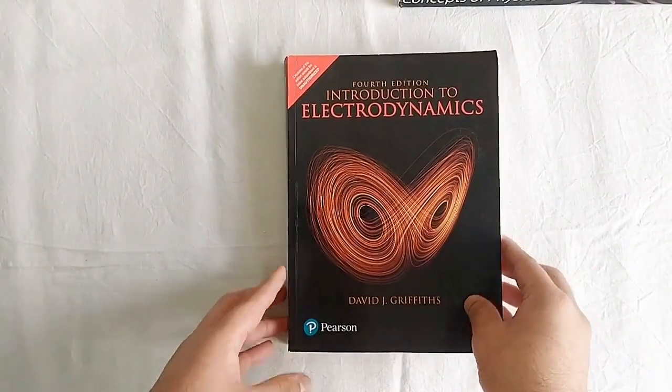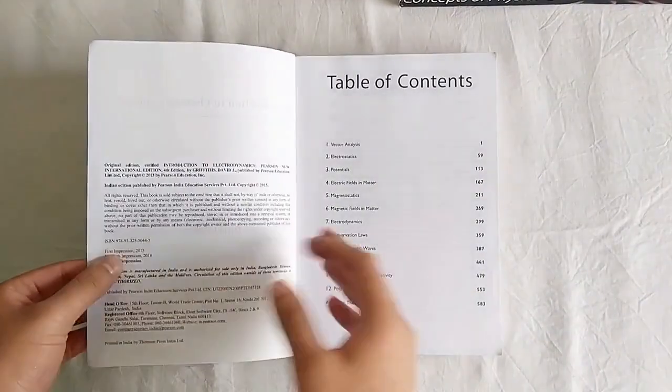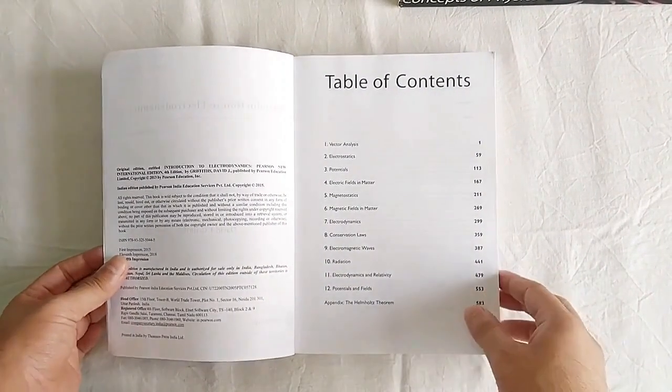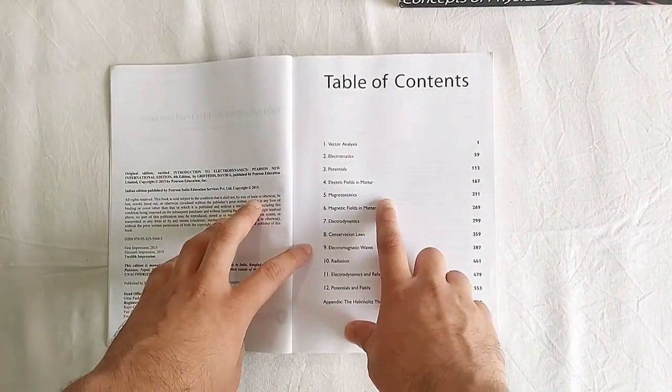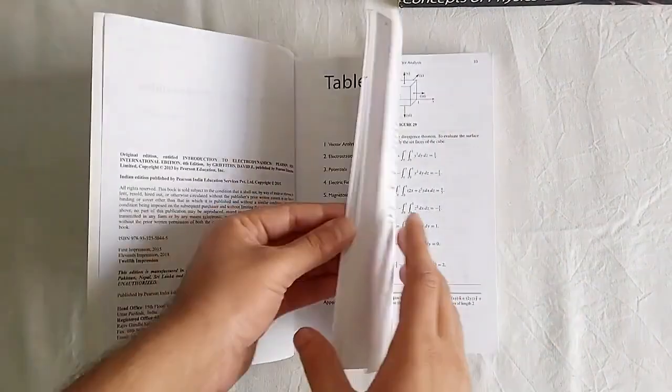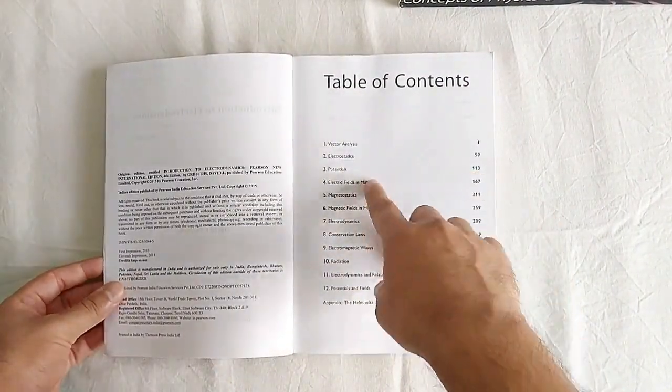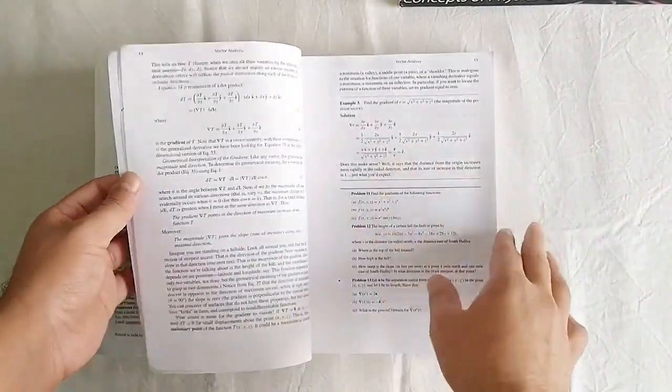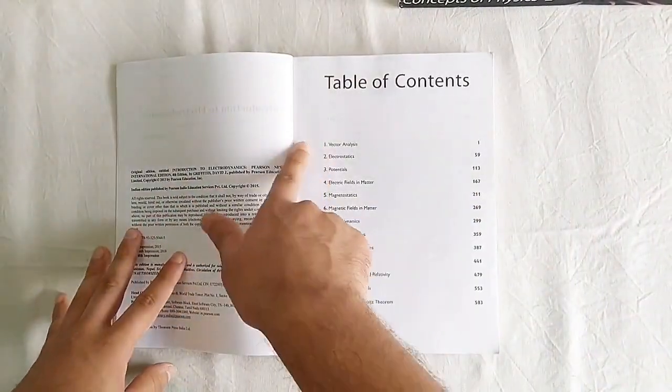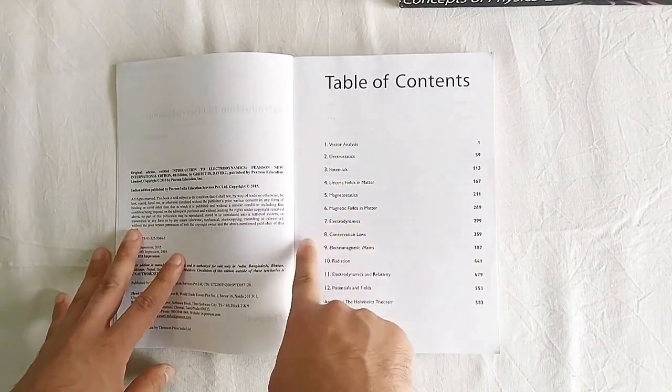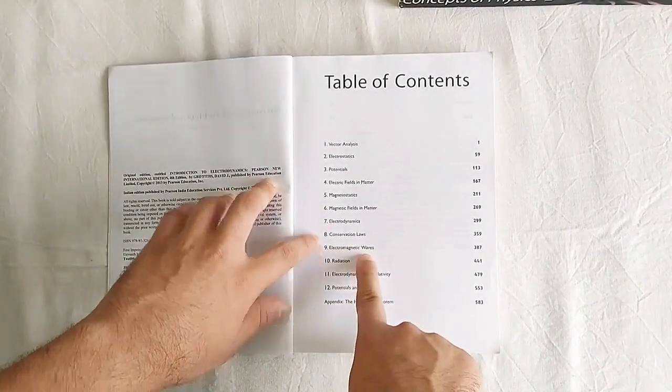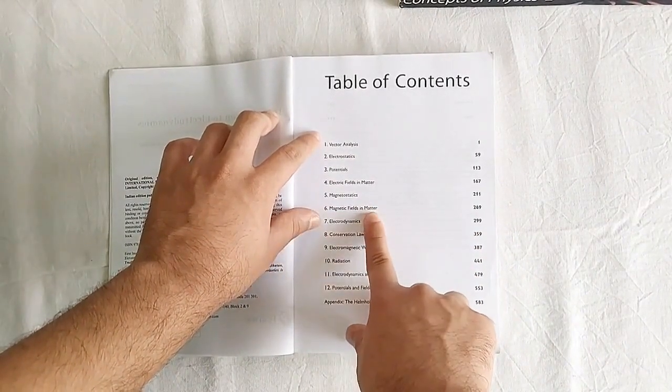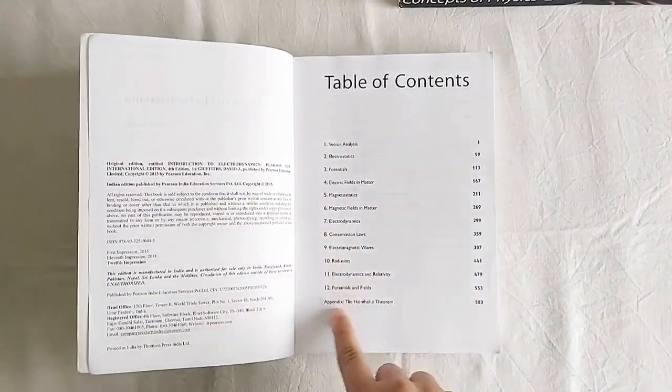The next book is Electrodynamics by D.J. Griffiths. So this book is a unanimous choice all over the world for electrodynamics. There is no confusion. If you go over the internet, you will see everyone recommending this book. And I remember I started reading through it when we had our electrodynamics course in B.Sc. And I went on reading it like a normal book. As in when the course was proceeding, I just used to read the corresponding chapters or parts from this book. And I went through vector analysis, all these up to chapter 7, skip conservation laws and jump to electromagnetics. So first 7 chapters: vector analysis, electrostatics, potential, electric fields in matter, magnetostatics, magnetic fields in matter, electrodynamics and electromagnetic waves. The other topics are M.Sc. related.